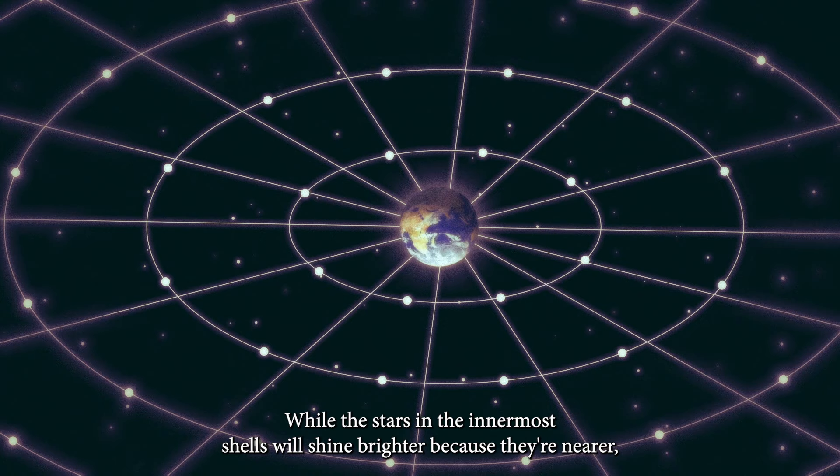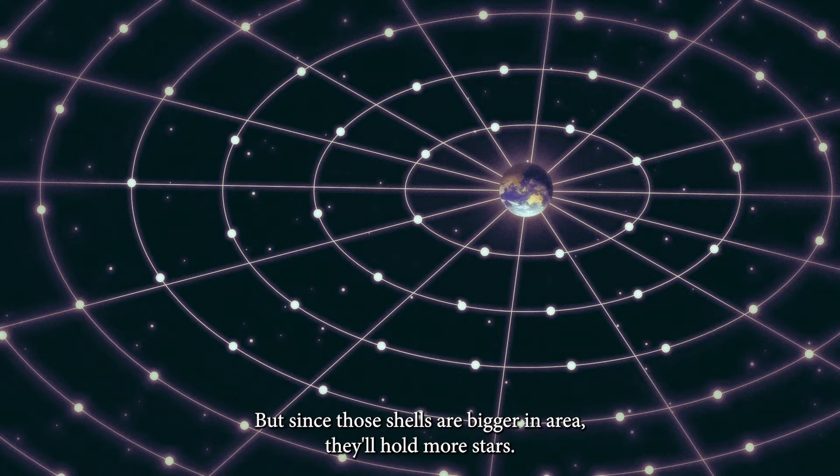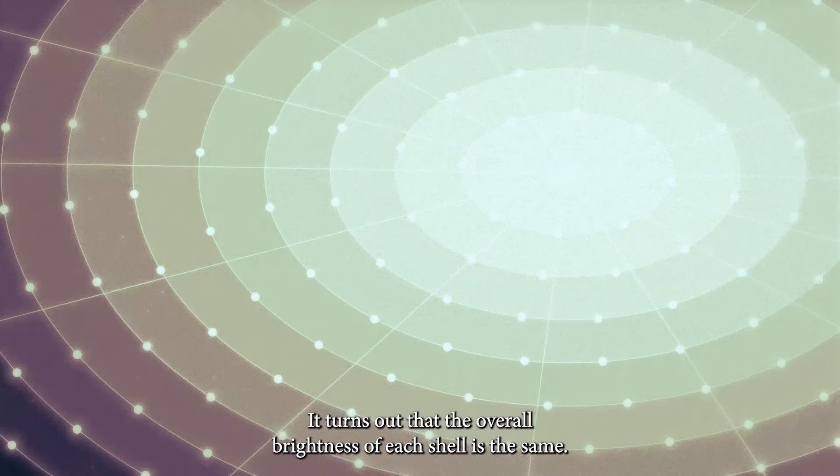while the stars in the innermost shells will shine brighter because they're nearer, the stars in the shells further out will be dimmer. But since those shells are bigger in area, they'll hold more stars. It turns out that the overall brightness of each shell is the same.